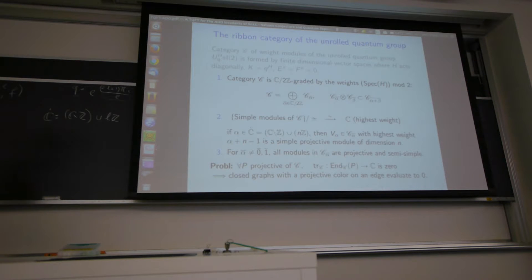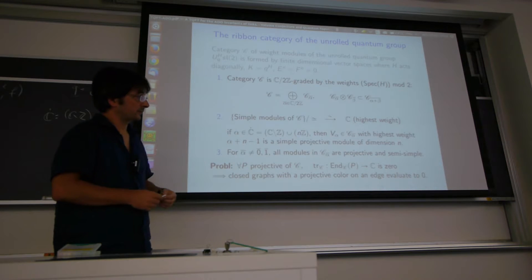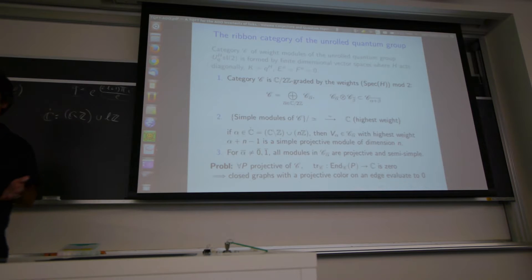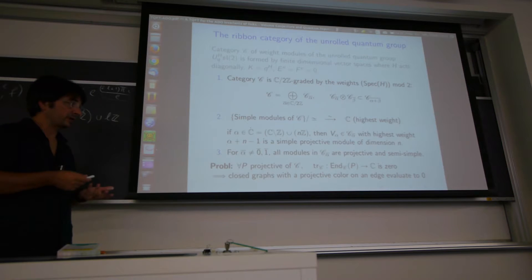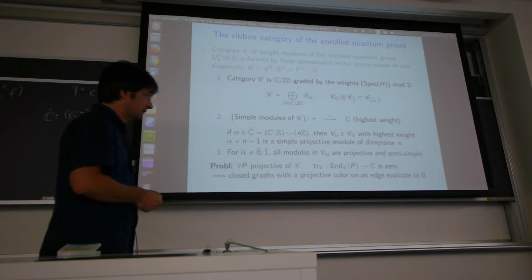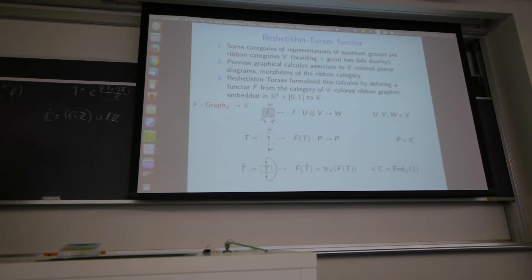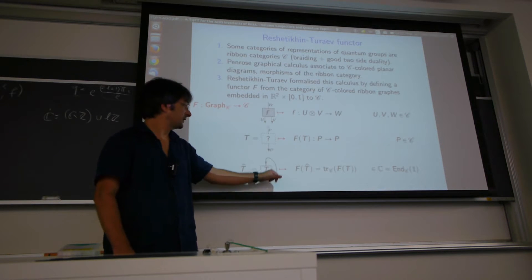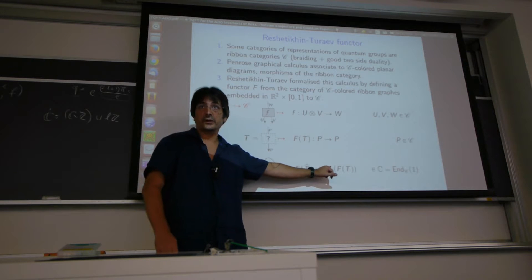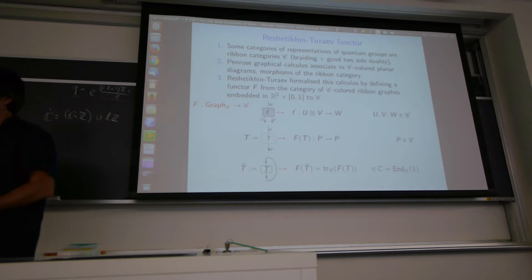The problem is that for any projective in this category, the categorical trace is zero. So if you take any endomorphism of a projective and compute the categorical trace, it is zero. This means any closed graph with a projective color on an edge will evaluate to zero. When you have a (1,1)-graph, it maps to an endomorphism of P, and when you close it, the scalar you get is the categorical trace — so the graphical calculus always gives zero for closed graphs.